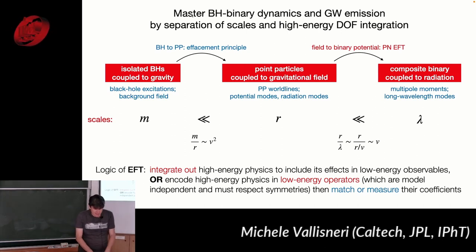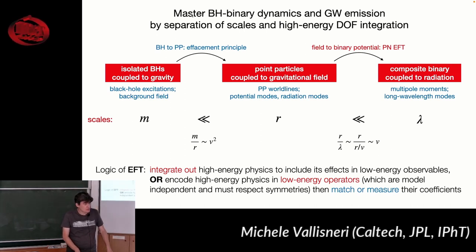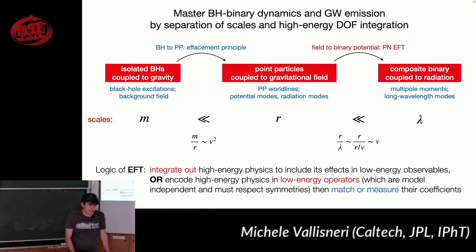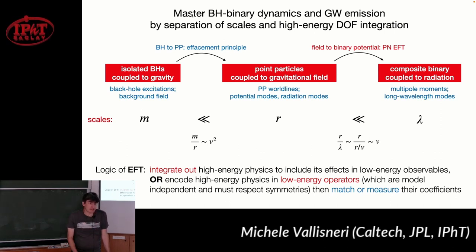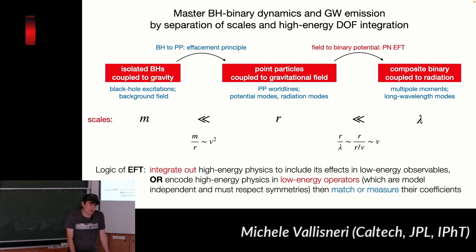You have an effective description, and you can bring in the high-energy physics two ways. One is formally integrating out the high-energy degrees of freedom: you know what they are, they're GR, you write them out, do the integrals, and are left with a simpler description. Or you can do matching: there are some coefficients you don't know, and you can either measure them if you have an experiment where they affect an observable, or match them with a targeted calculation that gets at the heart of what those coefficients mean.